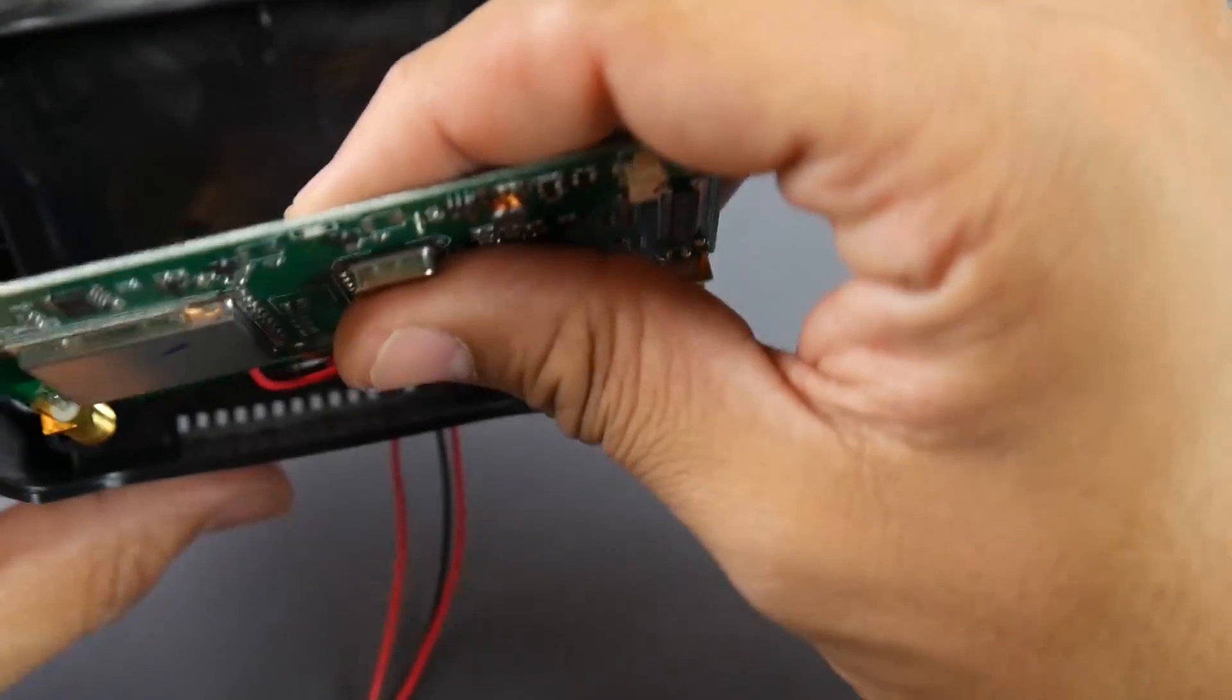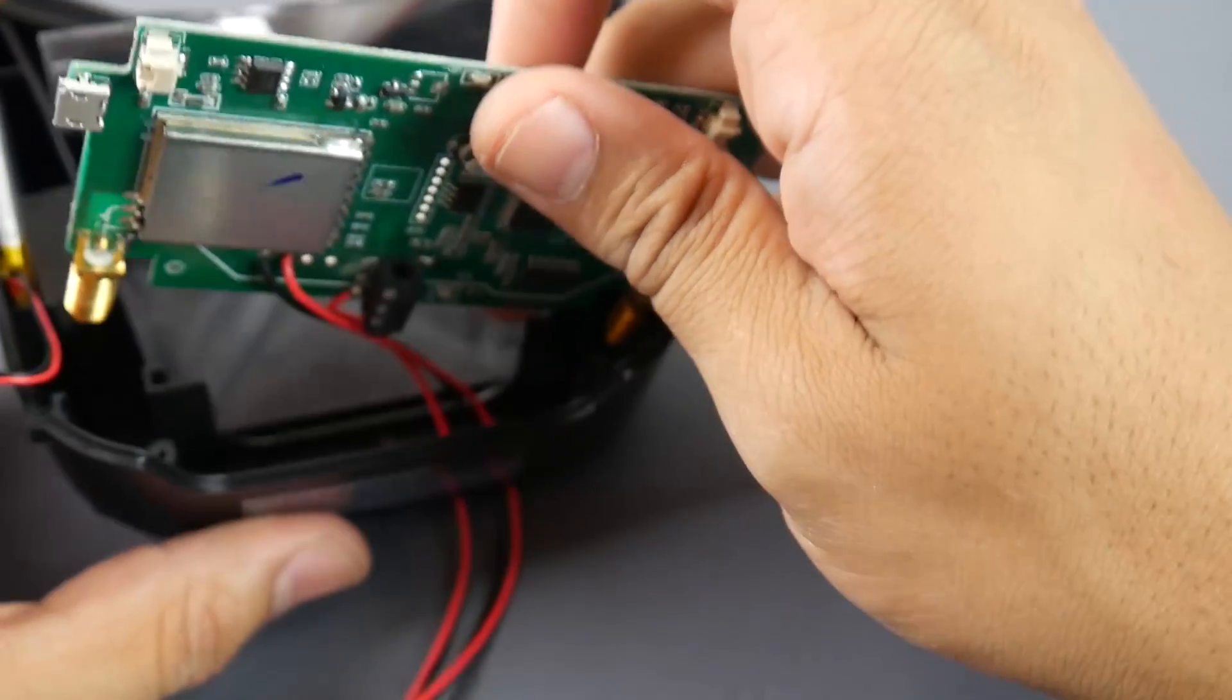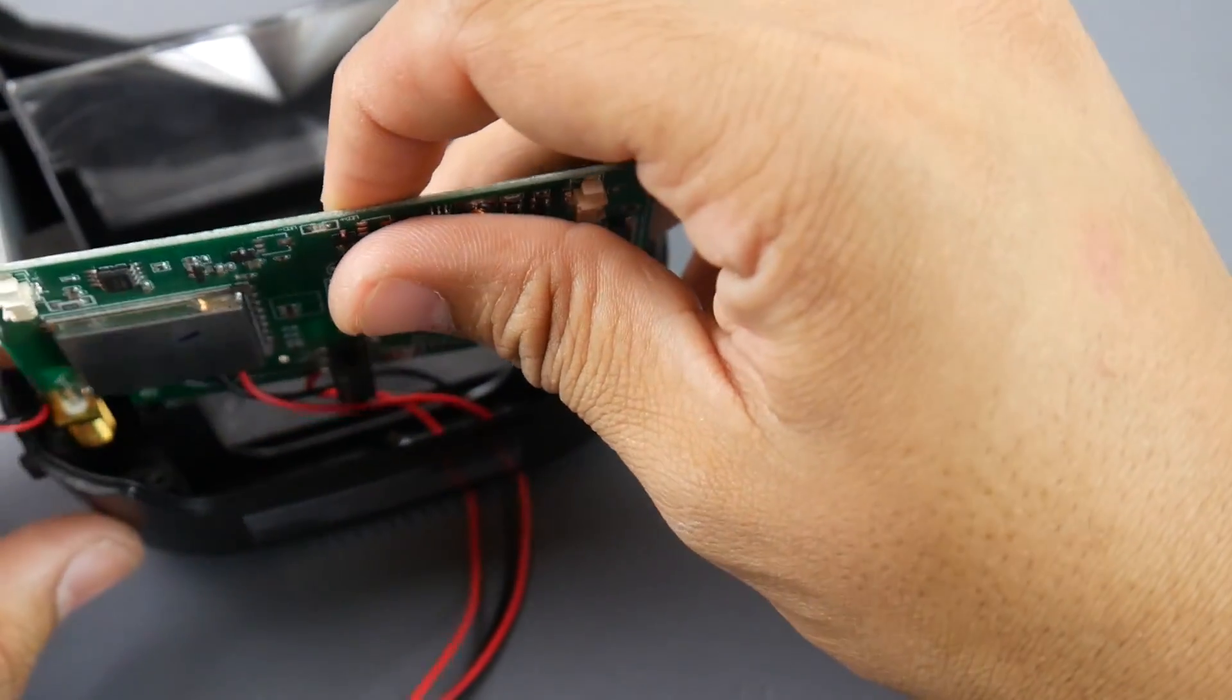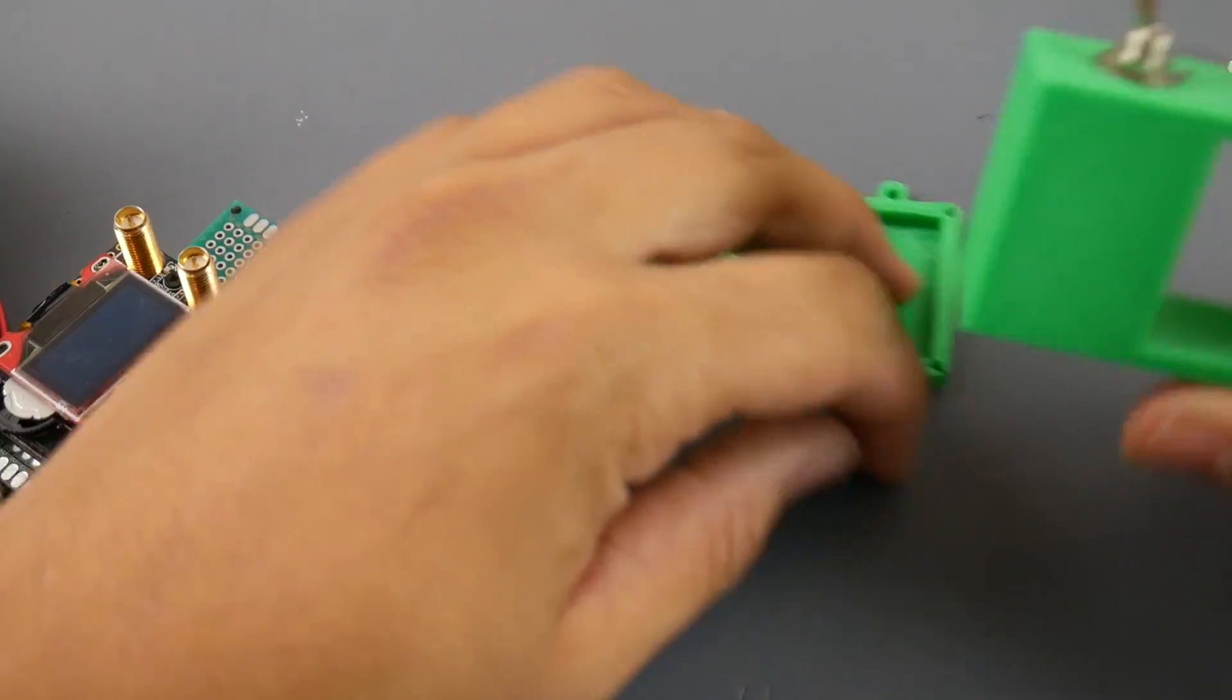So now we can put everything basically back into the goggle itself, because we're done here. All we're going to need is to create two holes, which I'll do with an X-Acto knife from the outside, and just thread them with an M3 screw.